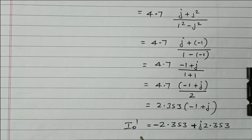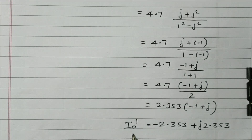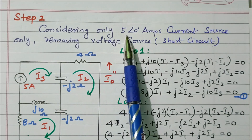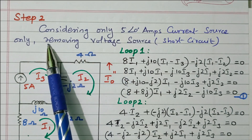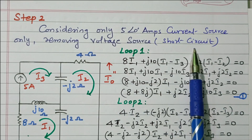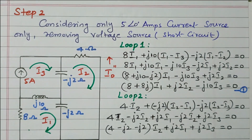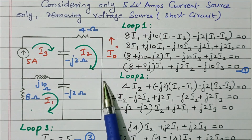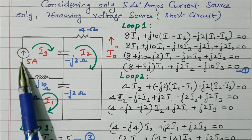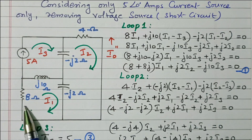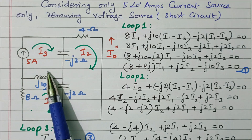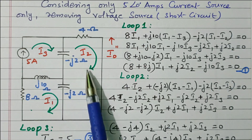Now we consider the current source. Step 2: consider the 5 ampere current source; the voltage source is removed by short circuit. The equivalent circuit with only the current source is now available. We apply KVL loop analysis to find I₀ double dash.